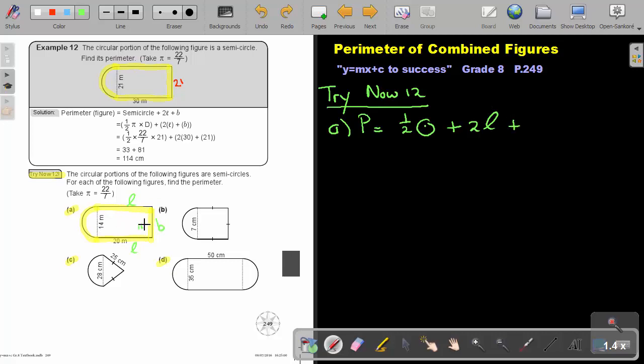So plus, let's just rewrite that, plus a breath. So that will be, now I just fill in the formulas. So it's half pi times the diameter, plus two lengths, plus a breath. And that will be half times, remember take pi as 22 over 7, times the diameter, which is 14.